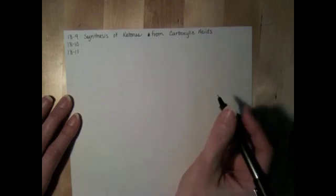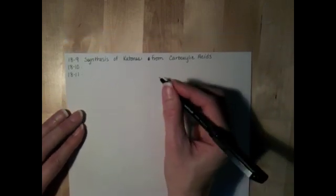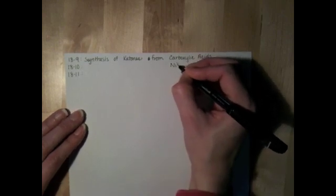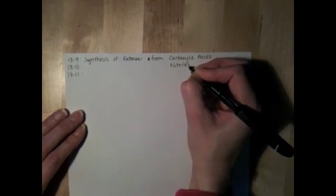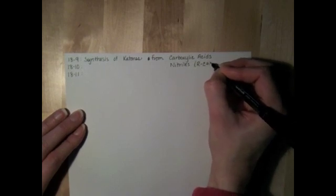And section 18.10 is covering the synthesis of ketones from nitriles, which are compounds that have the cyano group on them.